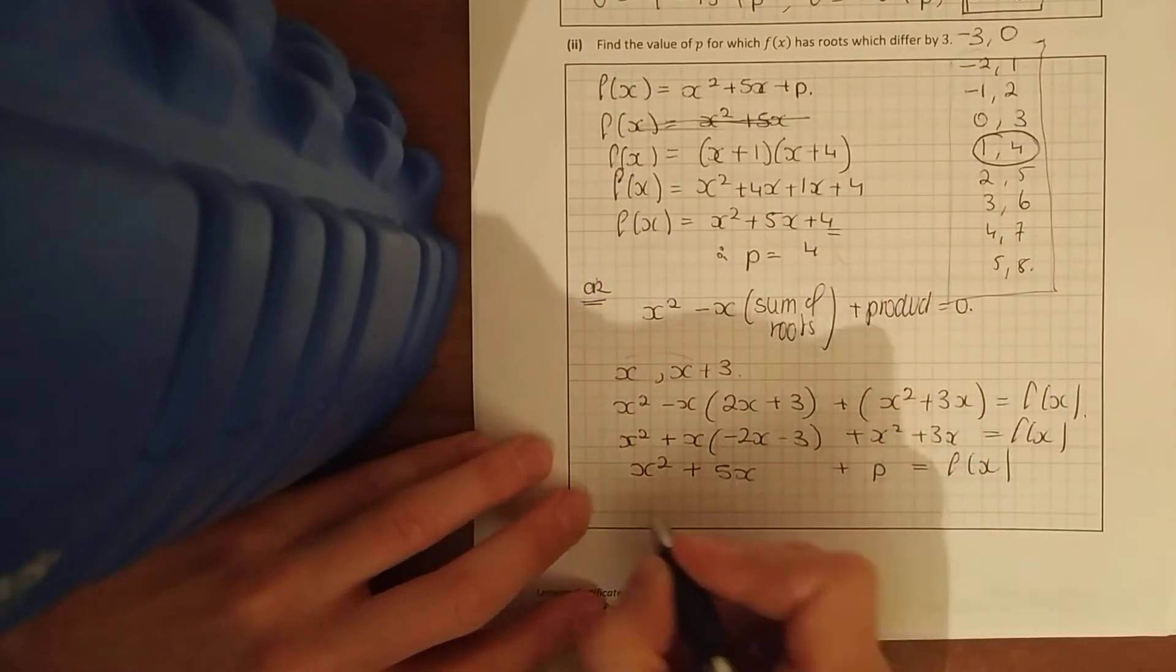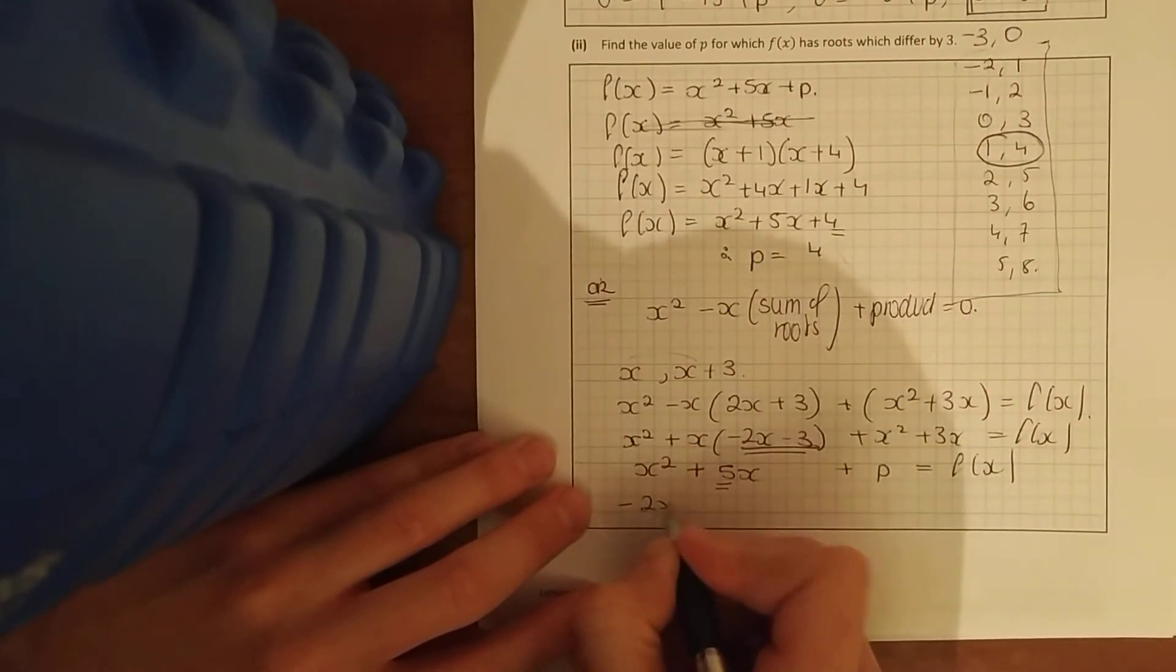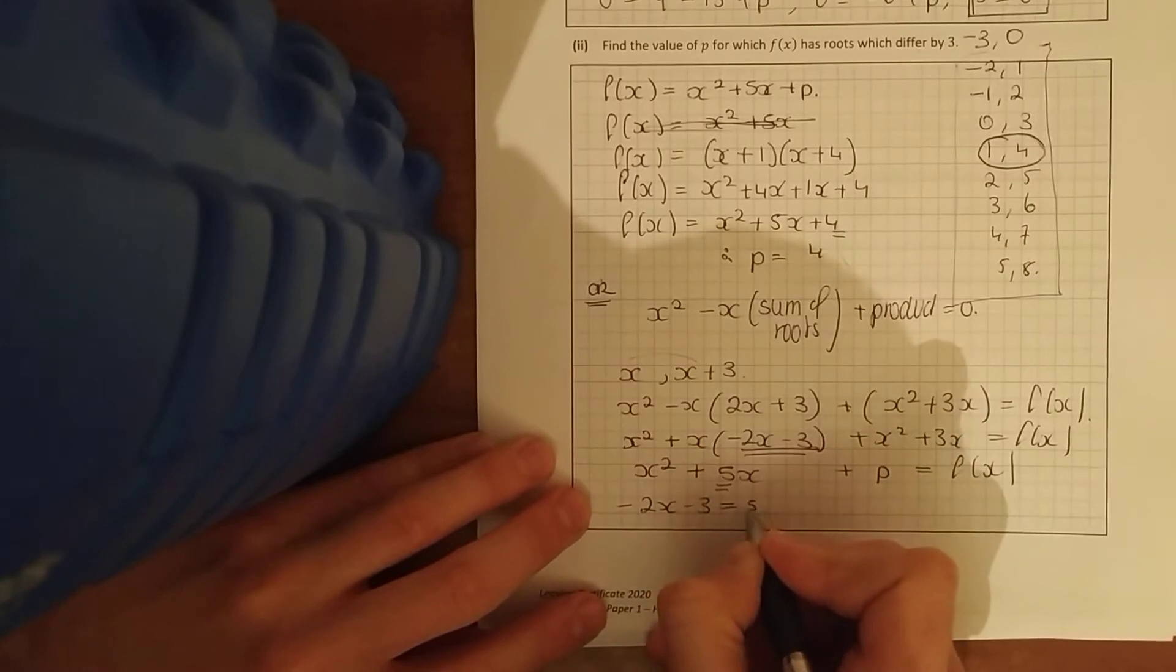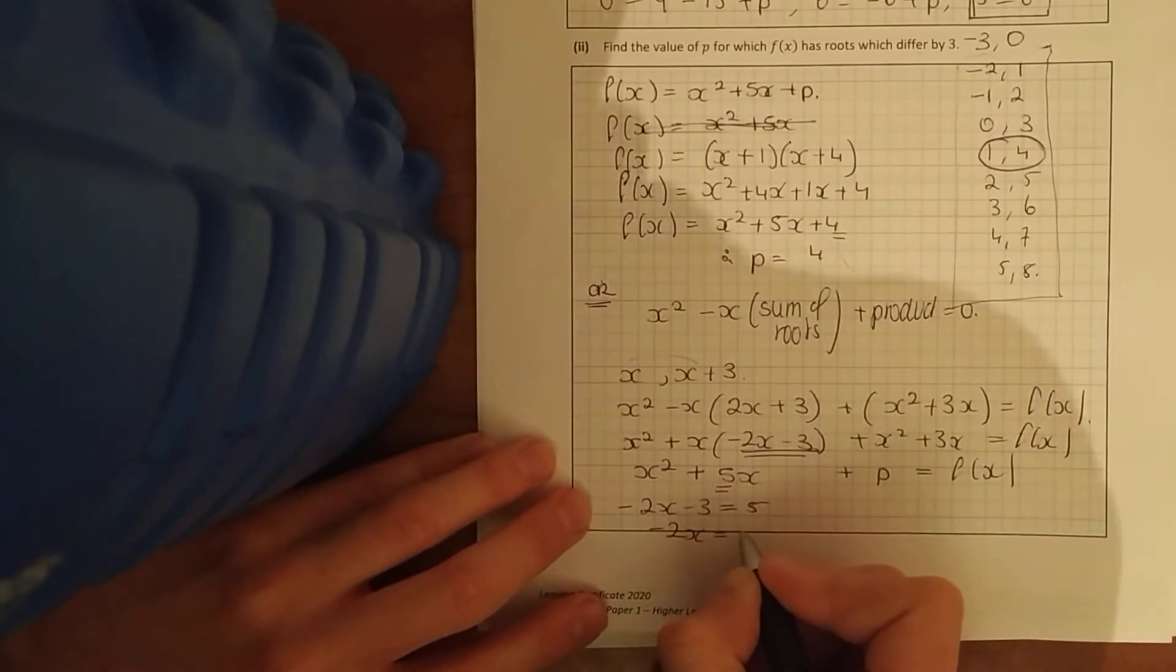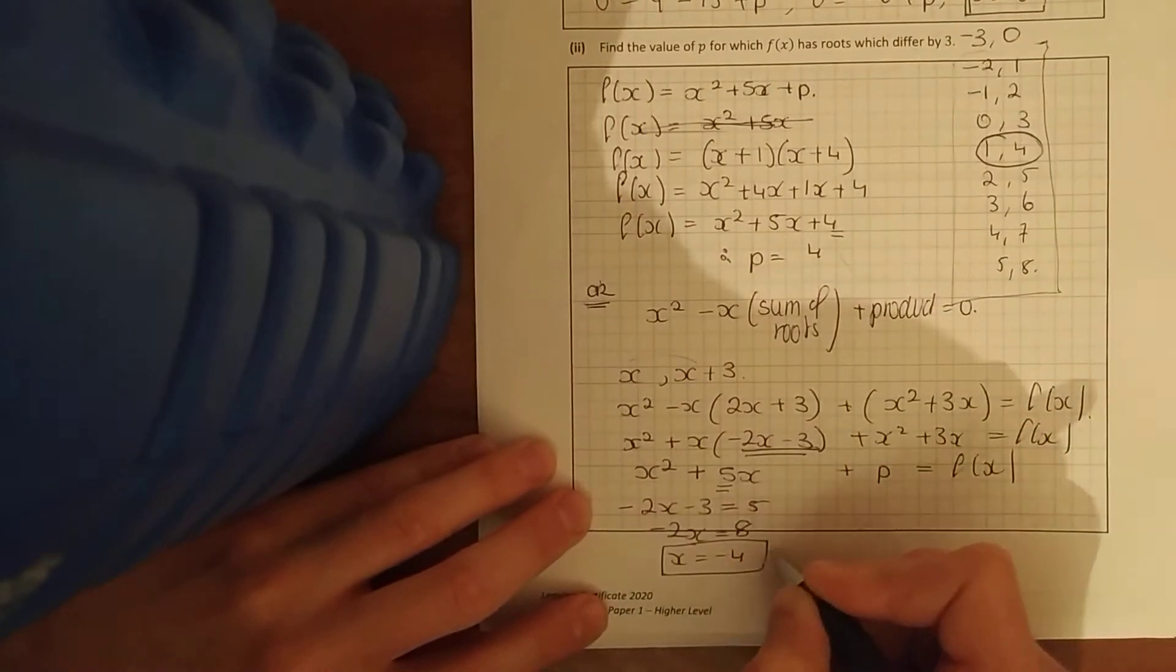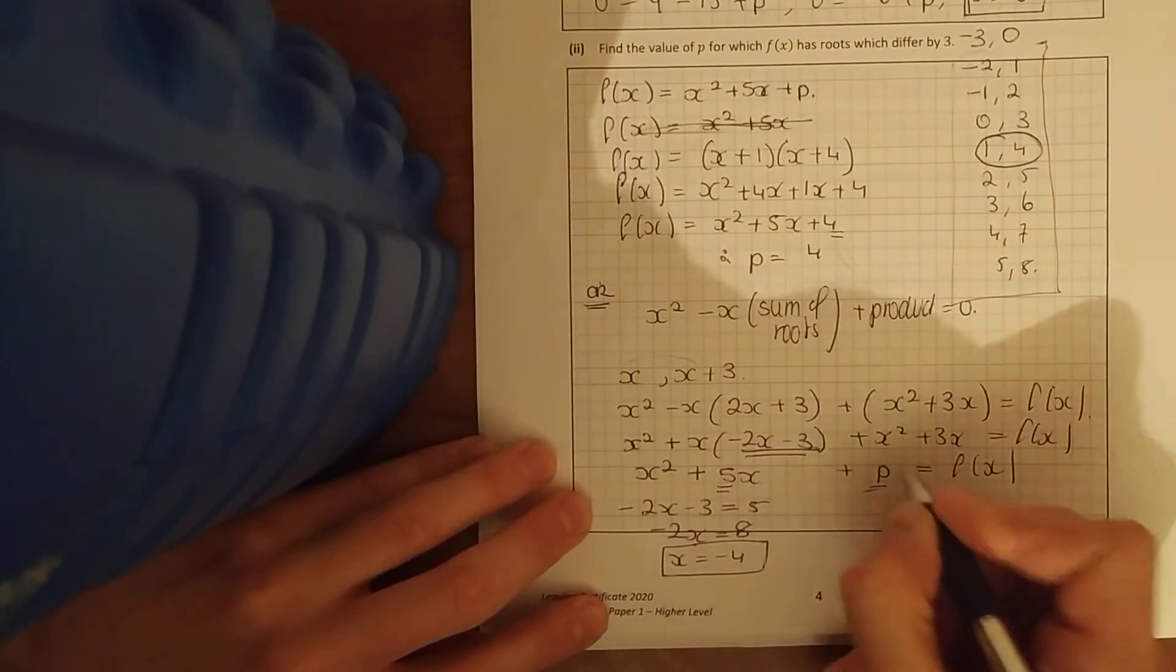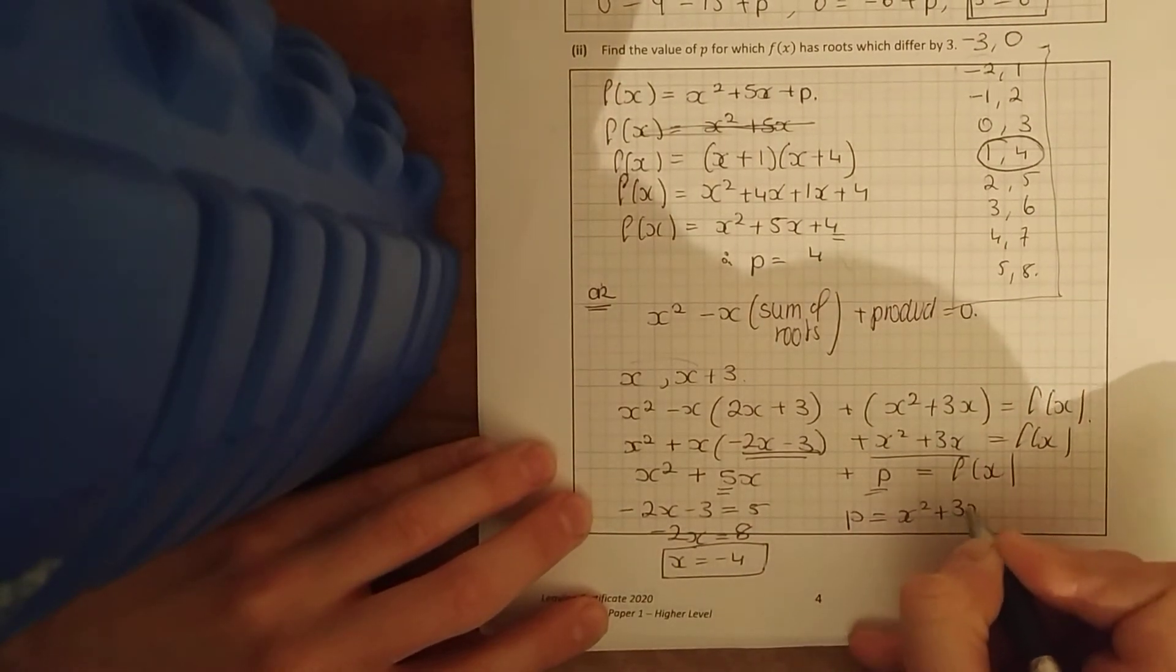And here I have, ignoring the x just matching up your coefficients, minus 2x minus 3 equals 5. Minus 2x equals 5 plus 3 is 8. x equals minus 4. And I'll use that into the next thing to work out p, because p equals all that. p equals x squared plus 3x.